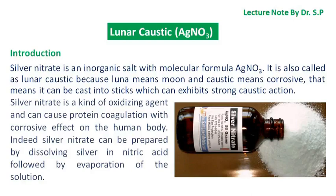In this tutorial we will discuss lunar caustic, or silver nitrate. Silver nitrate is an inorganic salt with molecular formula AgNO3. It is also called lunar caustic because luna means moon and caustic means corrosive, meaning it can be cast into sticks which exhibit strong caustic action. Silver nitrate is an oxidizing agent and can cause protein coagulation with corrosive effect on the human body.